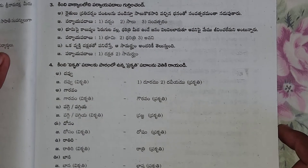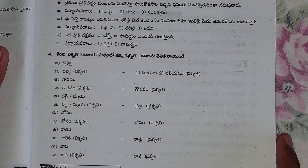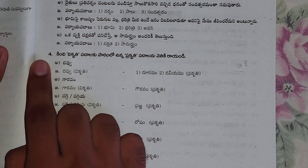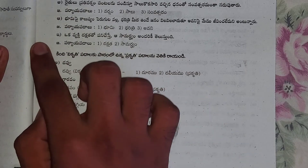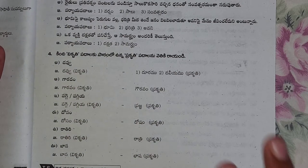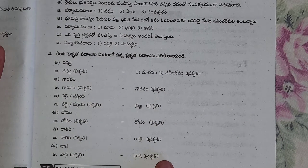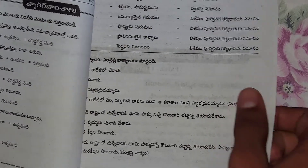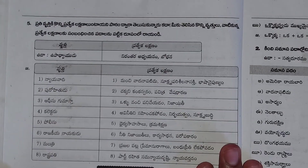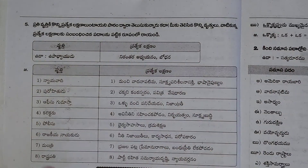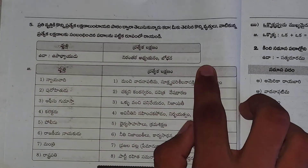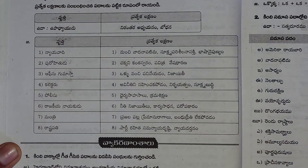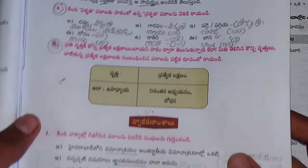After that we have the fourth question. The answer is continuously moving — fourth question starting from here and ending here, and the answer up to here ending on this page only. Then we have the fifth question in the third bit — don't get confused. The question is up to here and the answer starting from here and ending here. After that we have some more questions from our textbook.